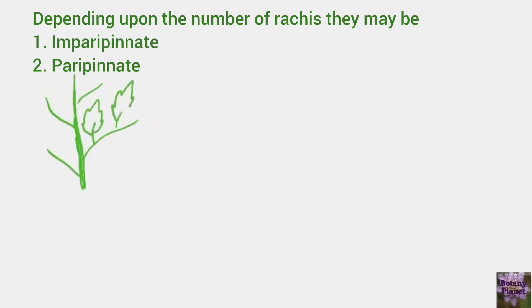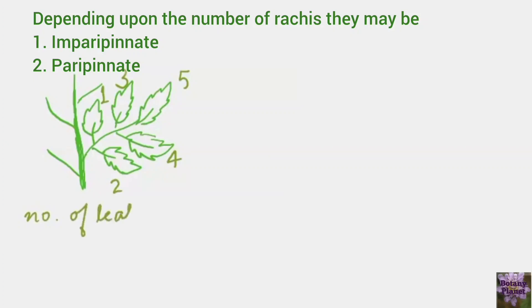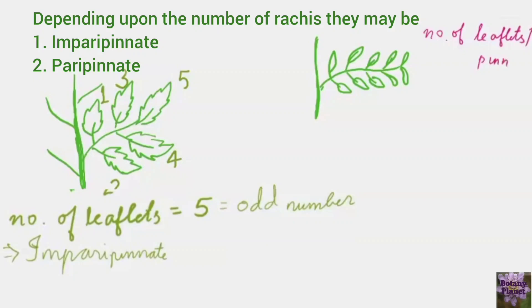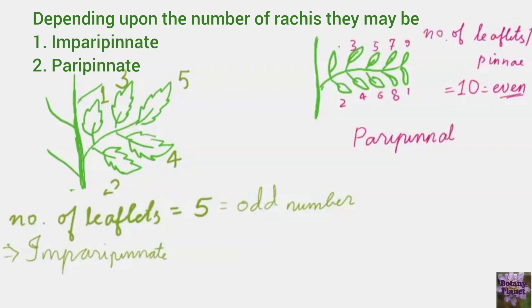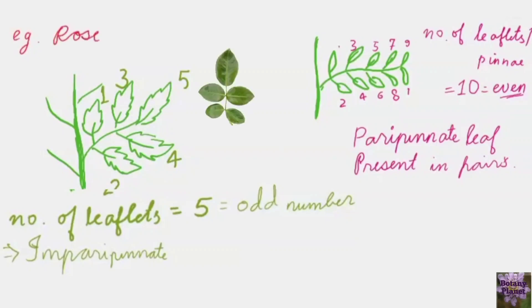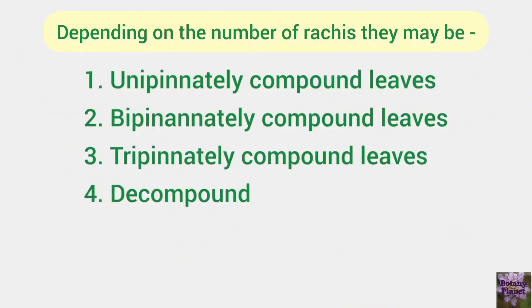Depending upon the number of leaflets present in a pinnately compound leaf, we have two kinds: imparipinnate and paripinnate. In imparipinnate leaves, the number of leaflets is odd — here five leaflets — so the leaflets are not present in pairs, and they are called imparipinnate compound leaves. In paripinnate compound leaves, the leaflets are present opposite each other forming pairs; the number of leaflets is even. An example of an imparipinnate compound leaf is rose, belonging to family Rosaceae, while the example of a paripinnate compound leaf is tamarind.